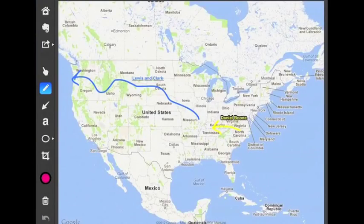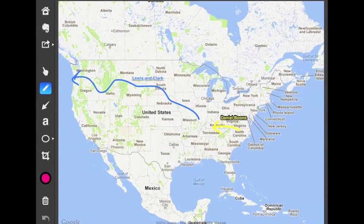Here is a picture of a map where we used the map feature within Skitch. I took a screenshot of this map and had students annotate the path of Lewis and Clark and Daniel Boone.